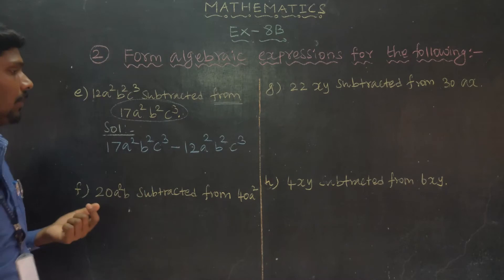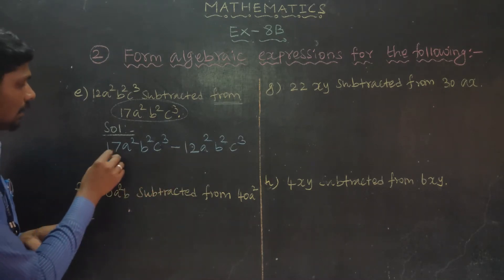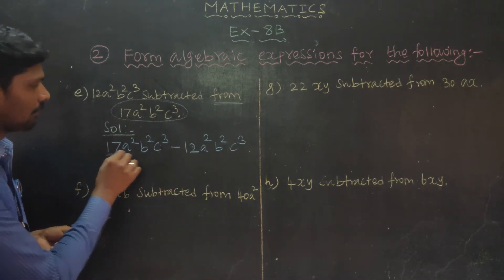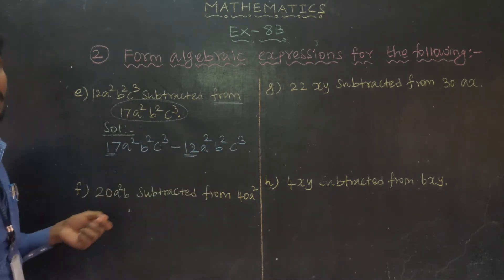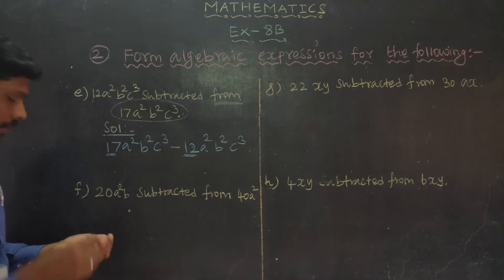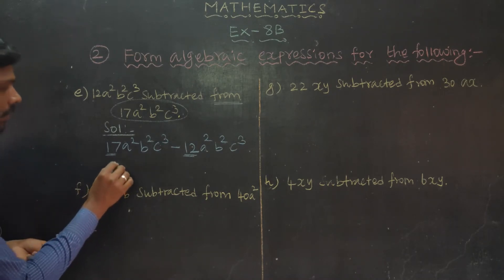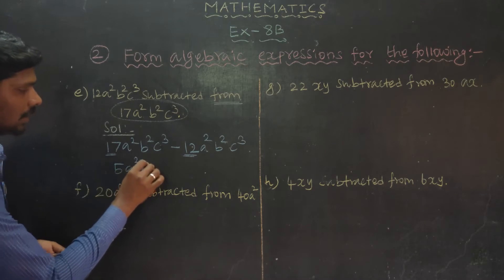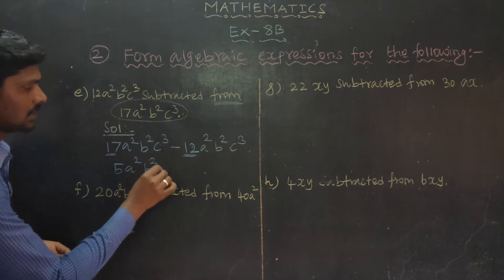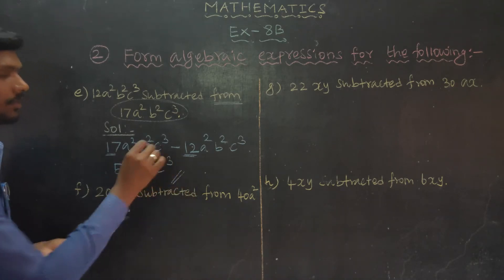Subtraction: 17 minus 12 equals 5. So the answer is 5 A squared B squared C power 3. Next.